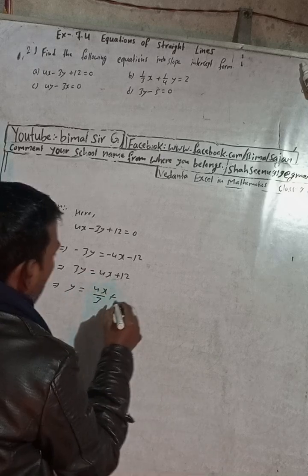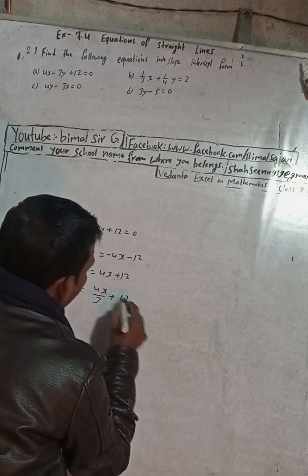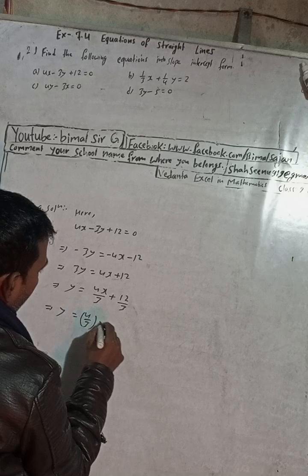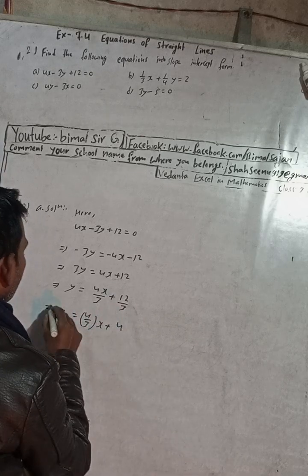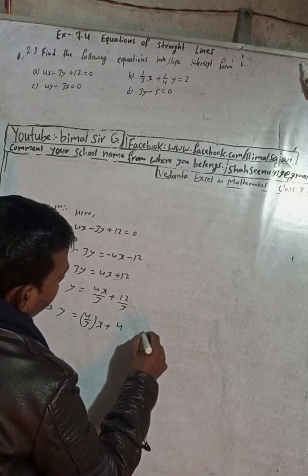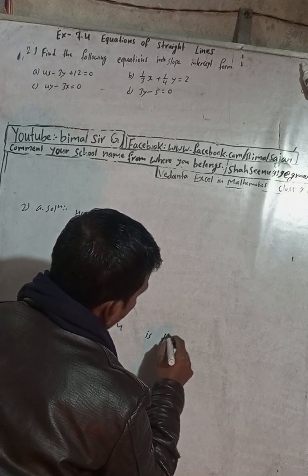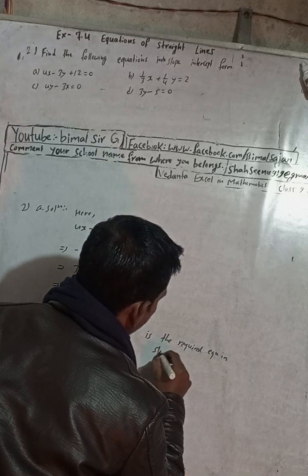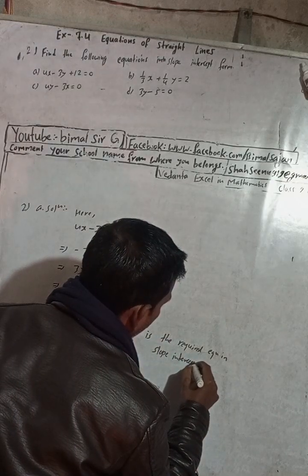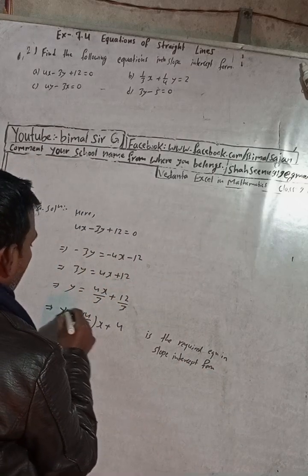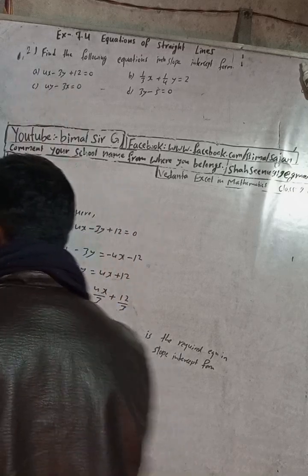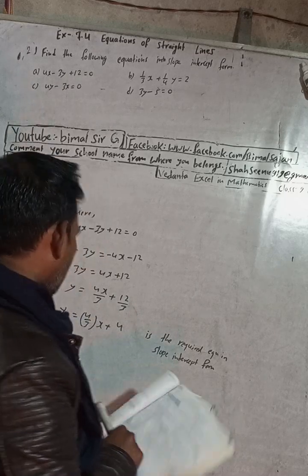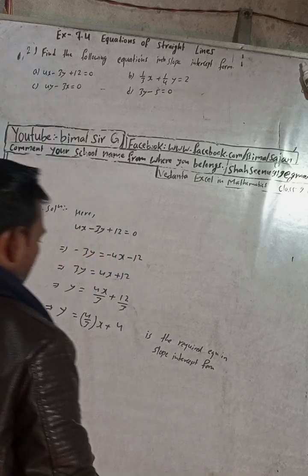Now write y = 4x divided by 3 plus 2 divided by 3. So we can write y = 4/3x plus 2/3 is equal to 4. Wait, this is y = 4/3x + 4/3. This is the slope-intercept form, the required equation in slope-intercept form. y = mx + c, your slope is 4/3. Let me check the answer in the book. 2a is given as y = 4/3x + 4. Correct, they haven't given brackets, it's your choice.